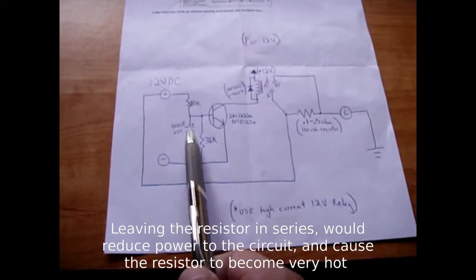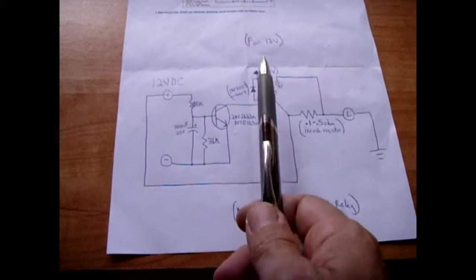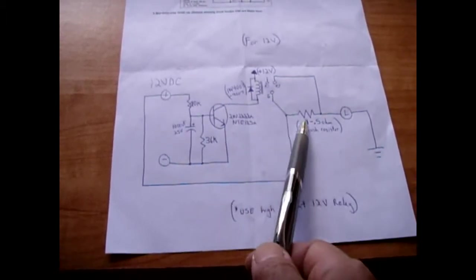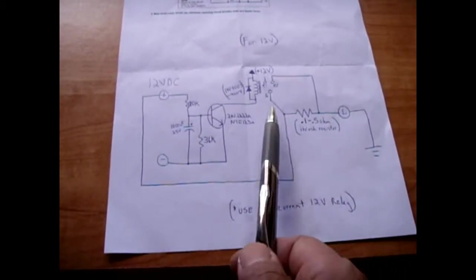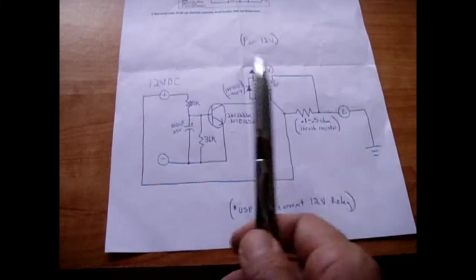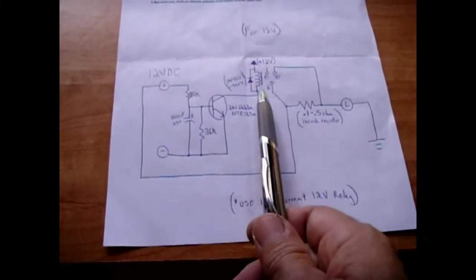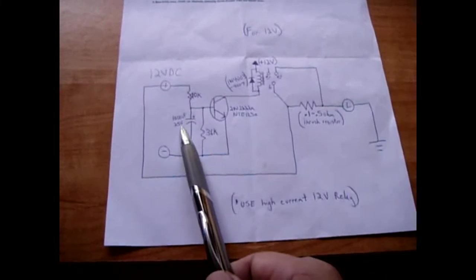So the resistor is in the circuit only for about a half of a second to a second. After that point, this circuit will turn on the relay, allowing the resistor to be bypassed and allowing full current to go to the load.